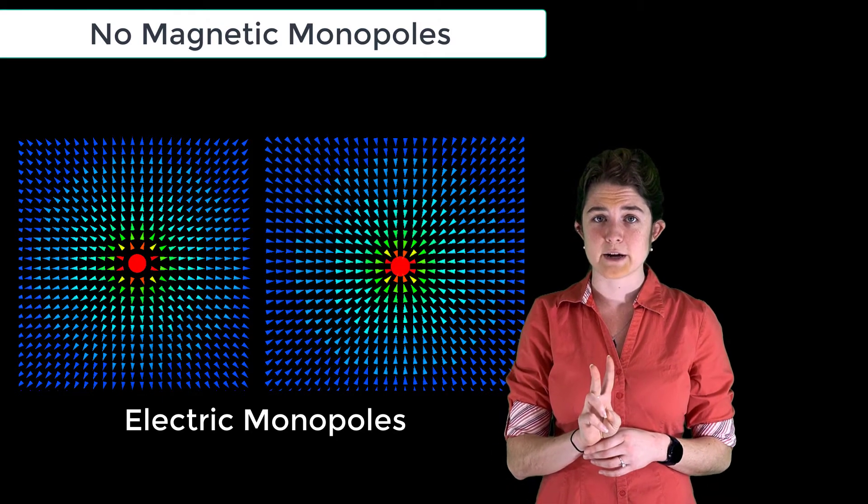Electricity has two possible kinds of monopole: positive charge, which acts as a field source and has outward pointing field vectors, and negative charge, which acts as a field sink and has inward pointing field vectors. Magnetism has no corollary for this. You can't have just a magnetic north pole or just a magnetic south pole. Every magnet, no matter how small, has both a north pole and a south pole.